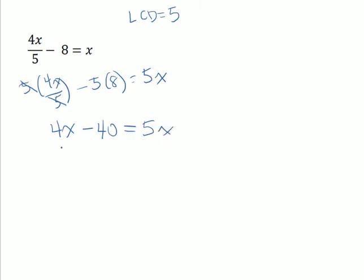We need to get all the x terms together on one side, so we subtract 4x from both sides. This leaves us with negative 40 equals x.